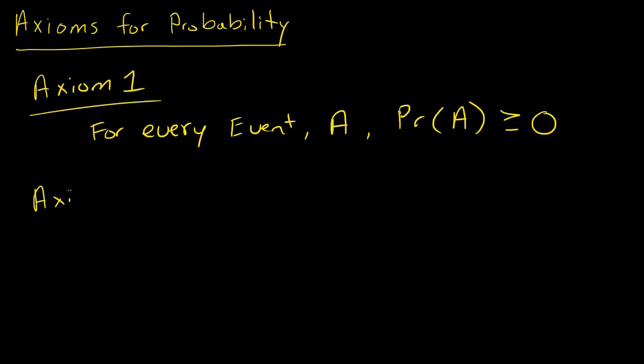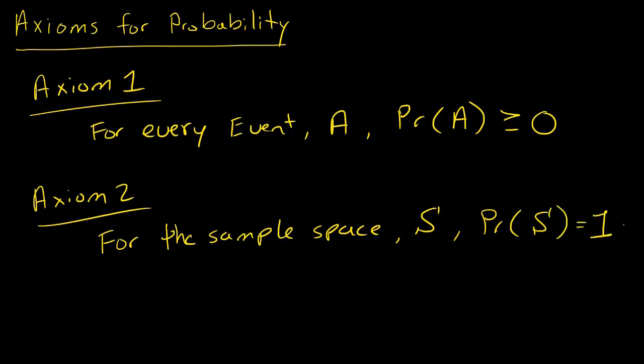Axiom two. Axiom two states that the probability of the sample space - for the sample space I'm going to use this notation S, capital S - for the sample space the probability, the total probability equals one. This is basically saying that total probability is one.